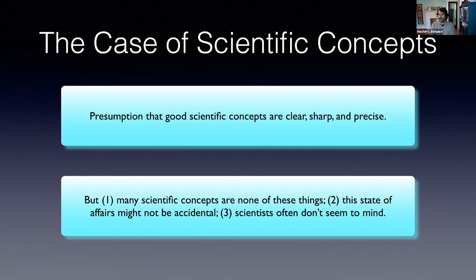On the other hand, it's very clear that in science many scientific concepts are none of these things. Many scientific concepts are not clear, many are vague, and many are confused. It's also plausible — and I will argue with many others — that the state of affairs where scientific concepts lack clarity, sharpness, and precision, and are also confused, is not an accident. It might actually be functional in science, at least in some research contexts. Scientists are fully aware of this lack and they just don't mind.